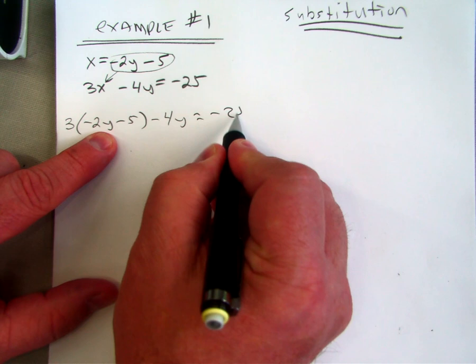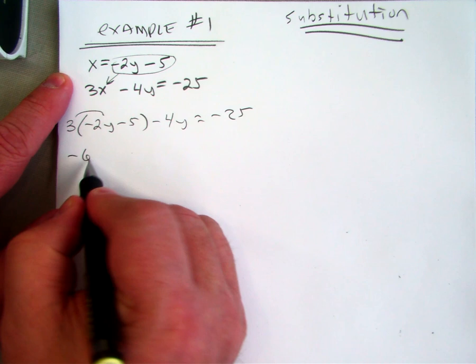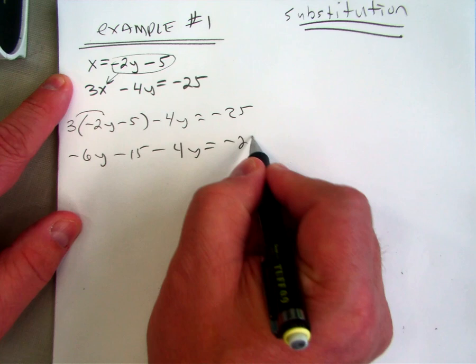I now have an equation, and I can just solve it. Negative 6y minus 15 minus 4y equals negative 25. Combine like terms.